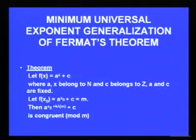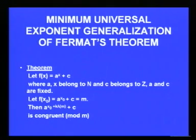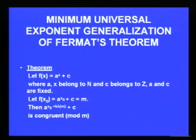Now we come to the theorem itself. The theorem states: let f(x) = a^x + c, where x belongs to N, c belongs to Z, and a and c are fixed. Let f(x₀) = a^(x₀) + c equal m; then a^(x₀ + kλ(m)) + c is congruent to m (mod m), where λ(m) is the minimum universal exponent. The proof is based on Taylor's theorem, and the emphasis is on predicting Mersenne prime factors of very large numbers by applying the property that 2^(kp − 1) / mp is isomorphic with Z_p.